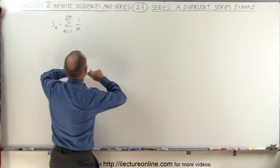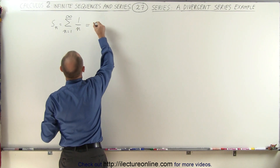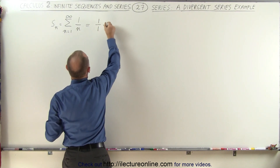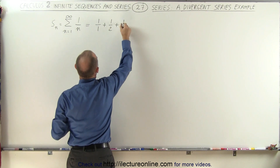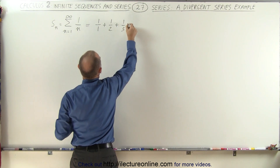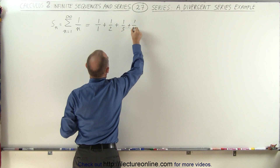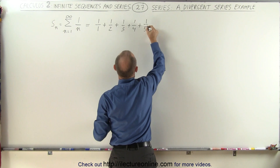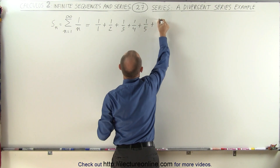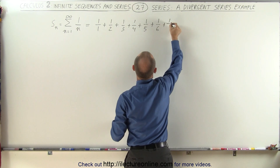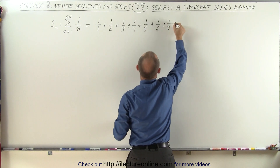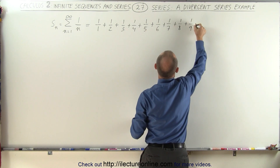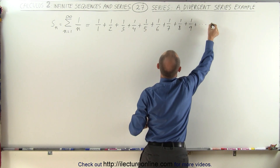That becomes very simple when you write it out. This is equal to 1 over 1 plus 1 over 2 plus 1 over 3 plus 1 over 4. I'll write a few of the terms because we're going to need them: 1 over 5 plus 1 over 6 plus 1 over 7 plus 1 over 8 plus 1 over 9, and so forth.